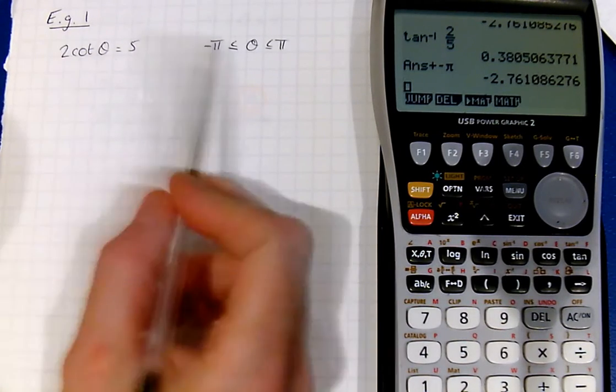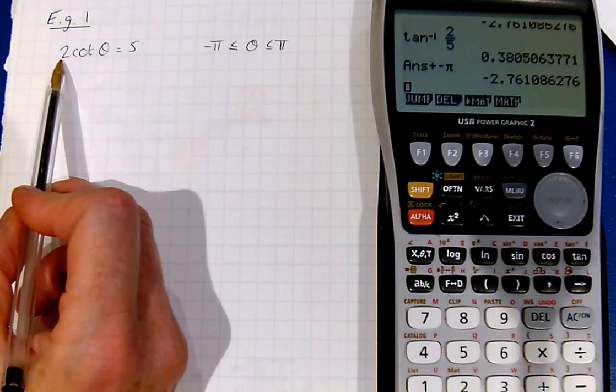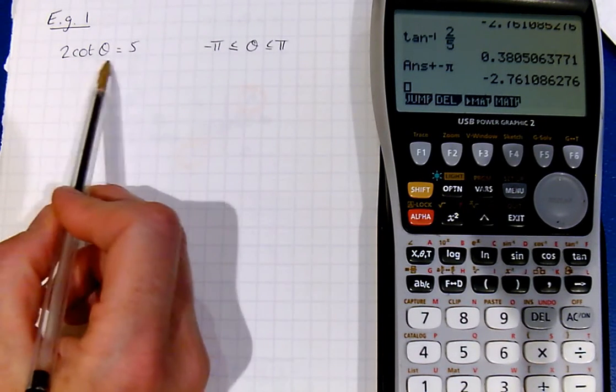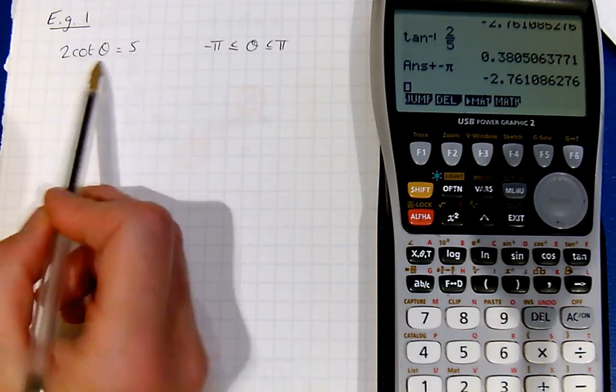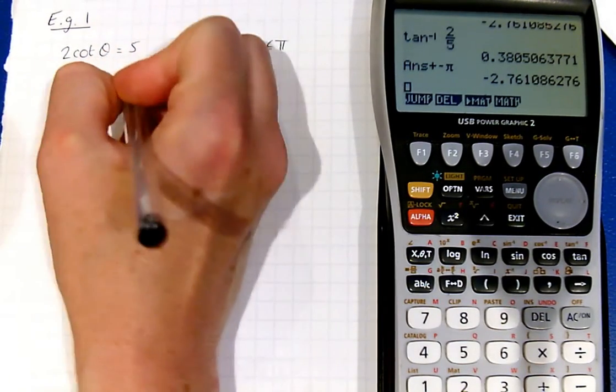For the first example, we see that we're working in radians. The trig function is not the subject at the minute, so we need to divide through by 2 to make sure it's on its own before we start.